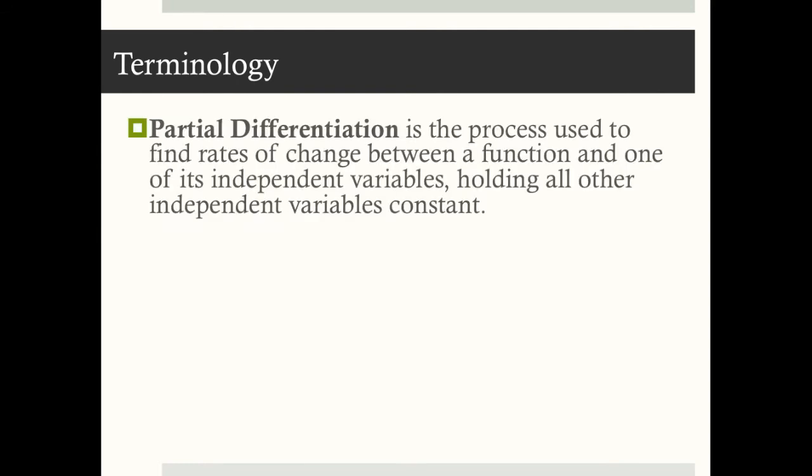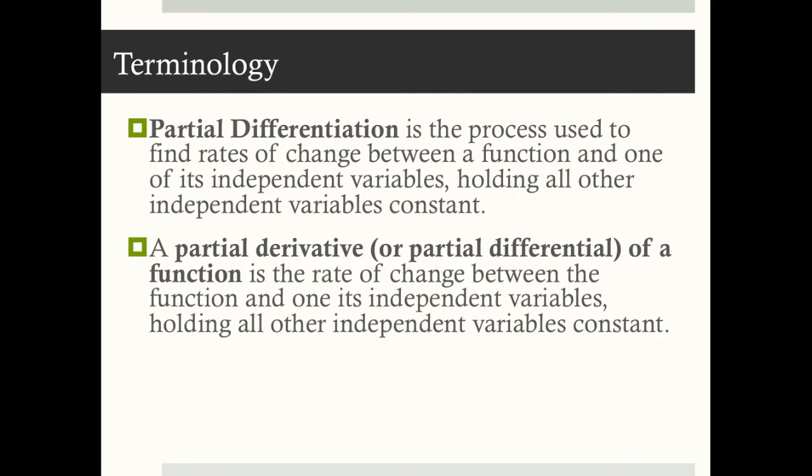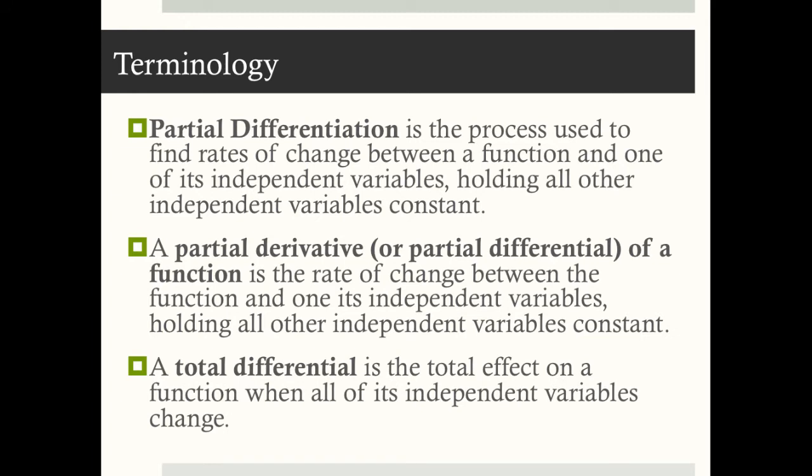Let's go through some basic terminology. Partial differentiation is the process used to find rates of change between a function and one of its independent variables, ceteris paribus. A partial derivative, or partial differential, of a function is the rate of change between the function and one of its independent variables, ceteris paribus. And a total differential is the total effect on a function when all of its independent variables change.